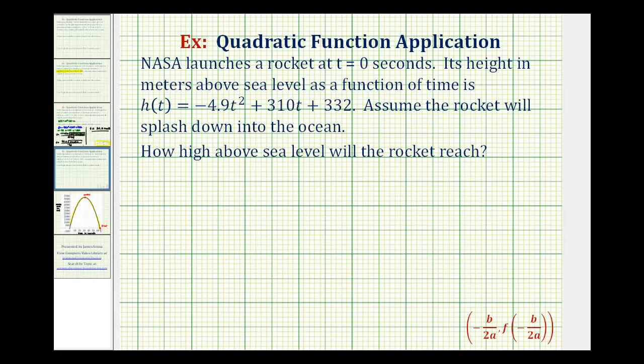And then for the second question, to determine how high above sea level the rocket will reach, we'll have to find the vertex of our parabola, where the x coordinate, or t coordinate in this case, is -b over 2a, and the y coordinate would be the function value when t is equal to -b over 2a.